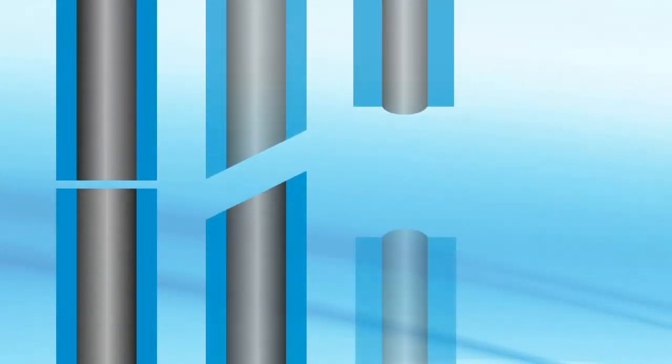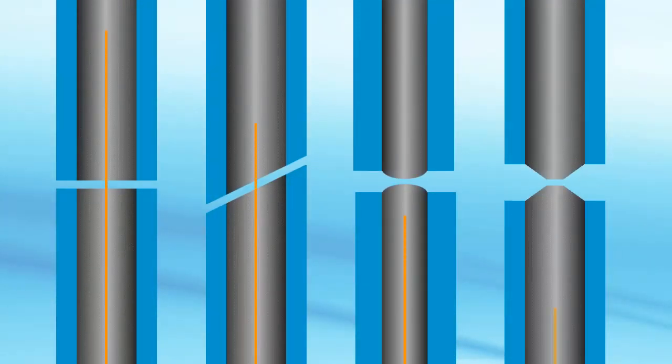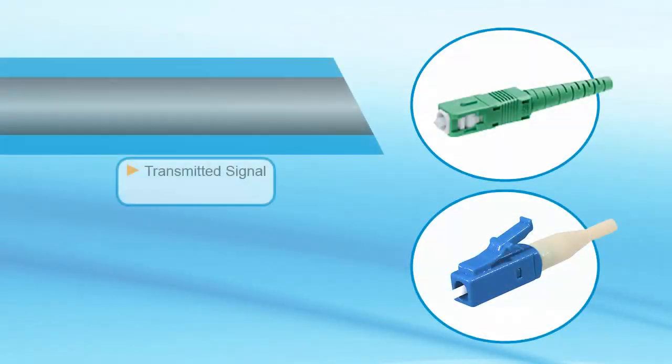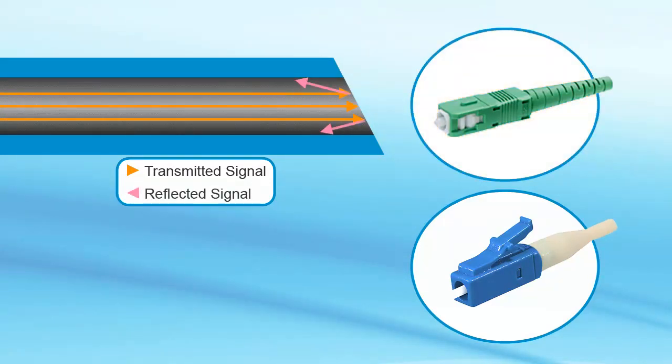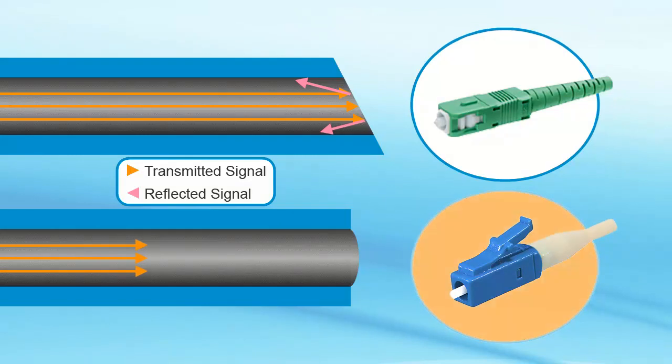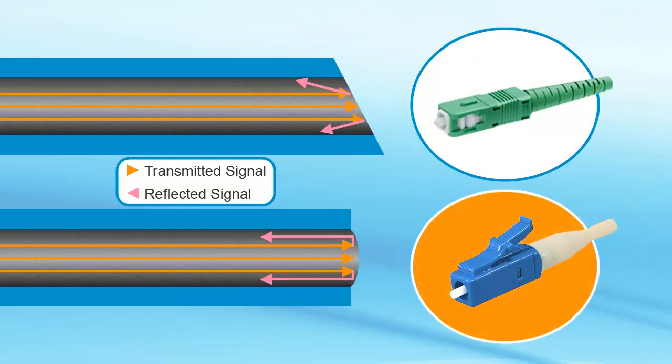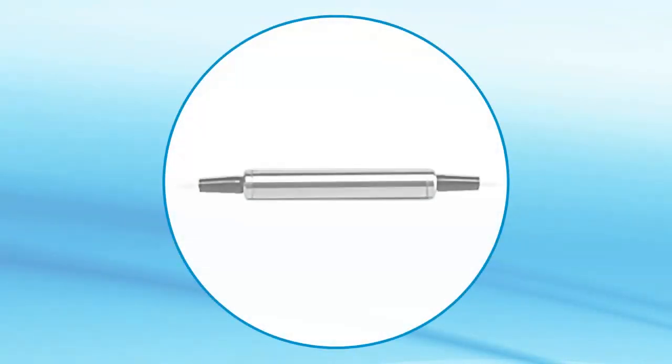Solutions are available that allow for a reduction in ORL or that limit the undesirable effects associated with a high ORL value, and they include the use of low-reflection connectors, such as APC, or angled physical contact, or HRL, high return loss, or UPC, ultra-physical contact. A second solution is to use an optical isolator near the laser in order to reduce back reflection levels.